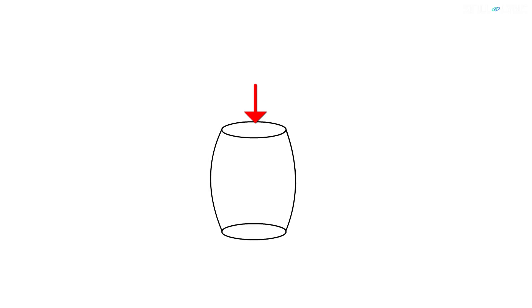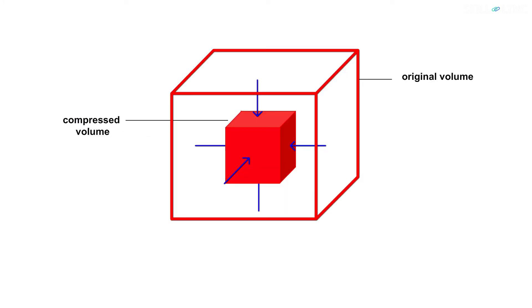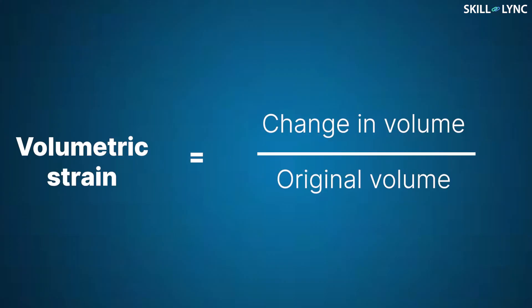Stress and strain play an important role here. If the stress is acting on the body from all directions, then such a stress is called bulk stress or volumetric stress. Volumetric stress tends to change the volume of a body. The strain produced by the bulk stress which causes a change in volume is called volumetric strain. The volumetric strain is given by the ratio of change in the volume to the original volume of a body.